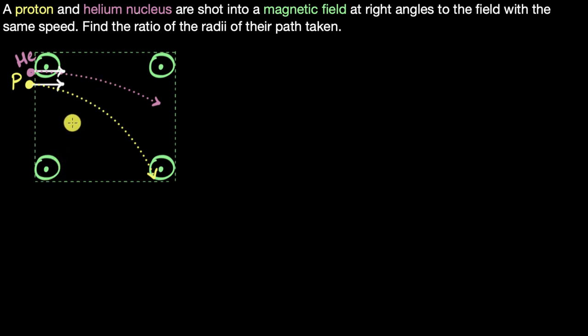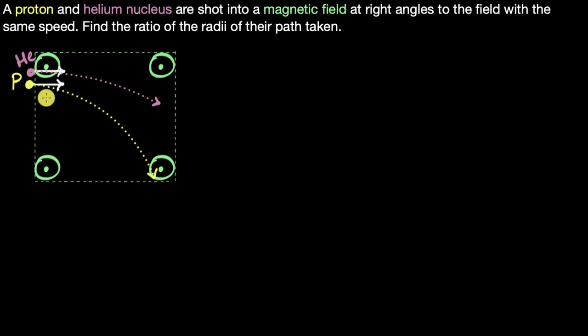Let's begin. The first question is: why does it go in circles? Let's remind ourselves why that happens. To find that out, we need to think about how to calculate the path taken by any object. For that, you need to first investigate the forces acting on it.